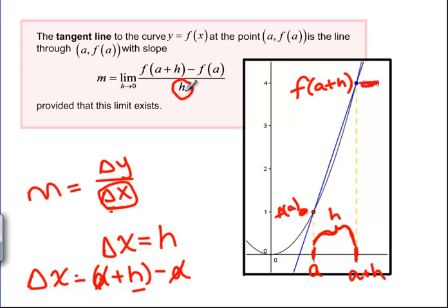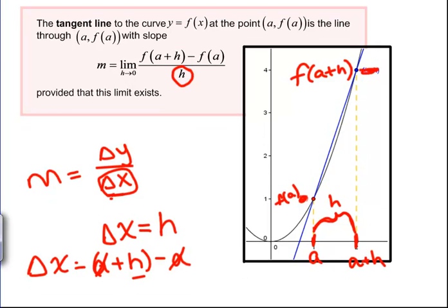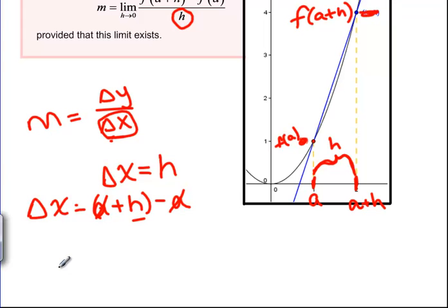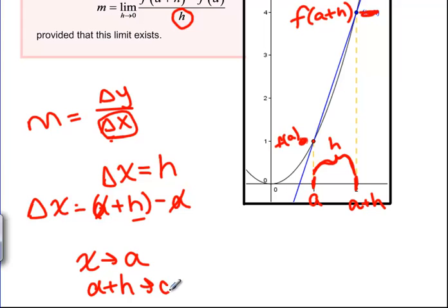Now what limit do we want to take? We were taking the limit as x approached a, which would be like taking the limit as a plus h approaches a. But how do we make a plus h go to a? We make h go to 0. So as the distance between those two points goes to 0, we get the limit value we want. Let's try this with the same example from the previous video and see how it works.